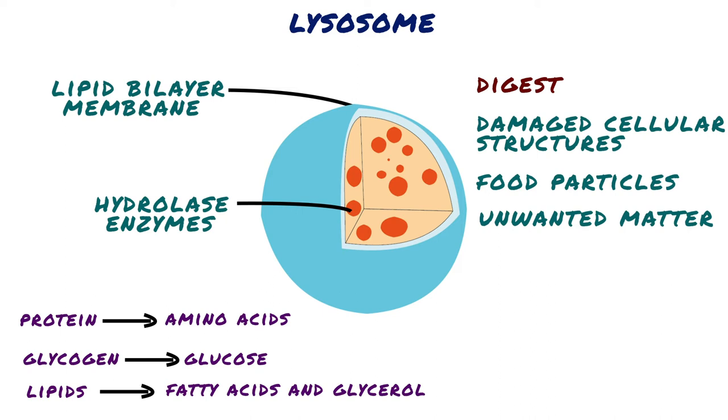Digestion products, including simple sugars, amino acids, and other monomers, pass into the cytosol and become nutrients for the cell.